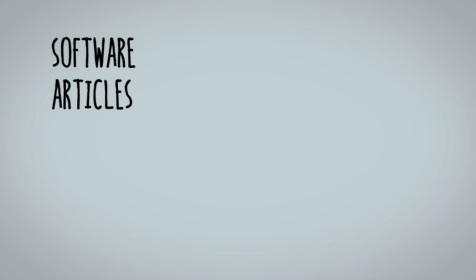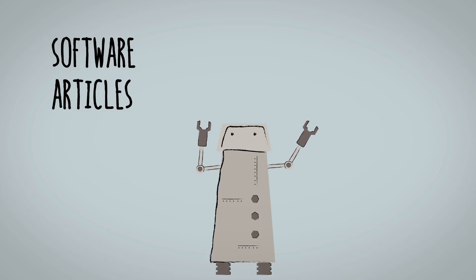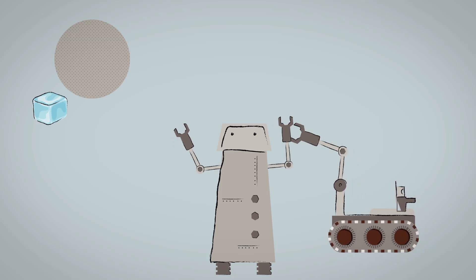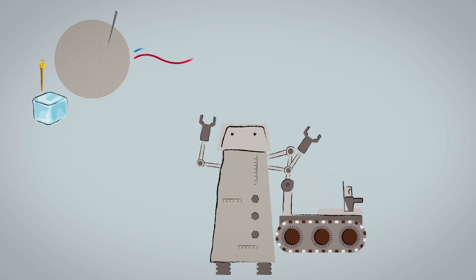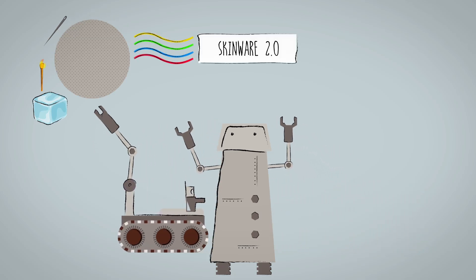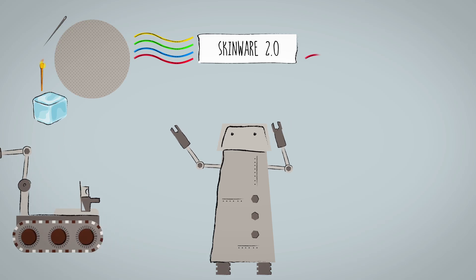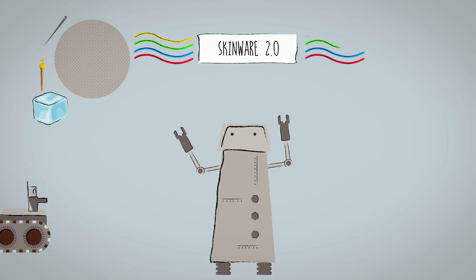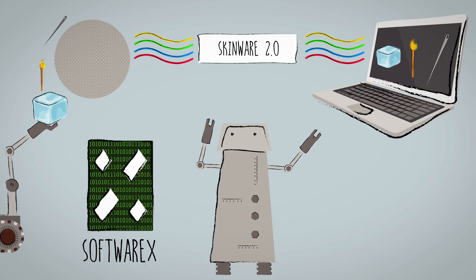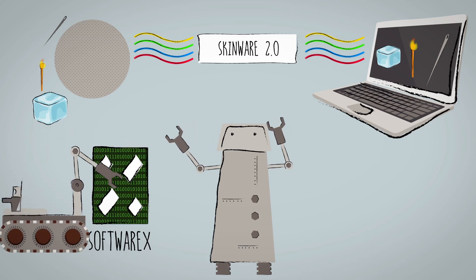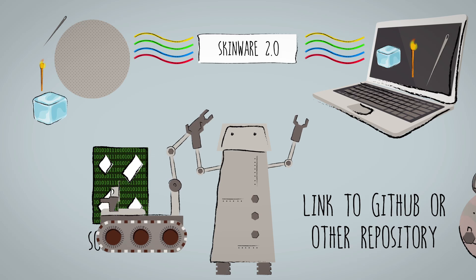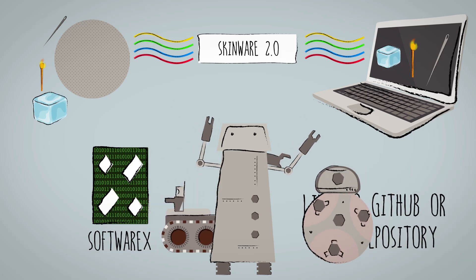Software articles describe software and link to a preserved version of the code. When American researchers launched Skinware 2.0, a major update to their well-known robot skin interface software, they published it in SoftwareX, making it possible for other researchers to access and reuse it — not only today, but also far into the future.